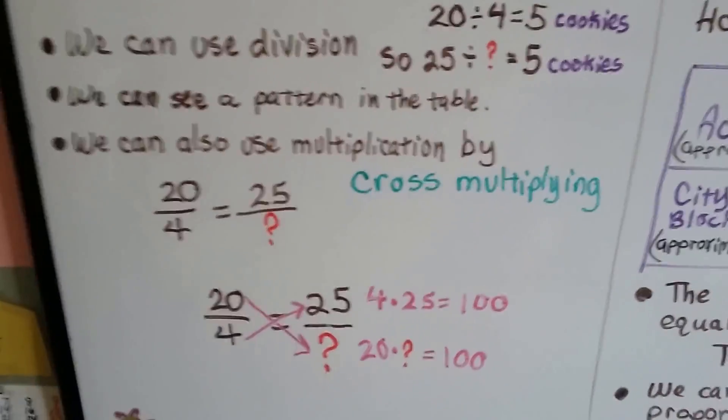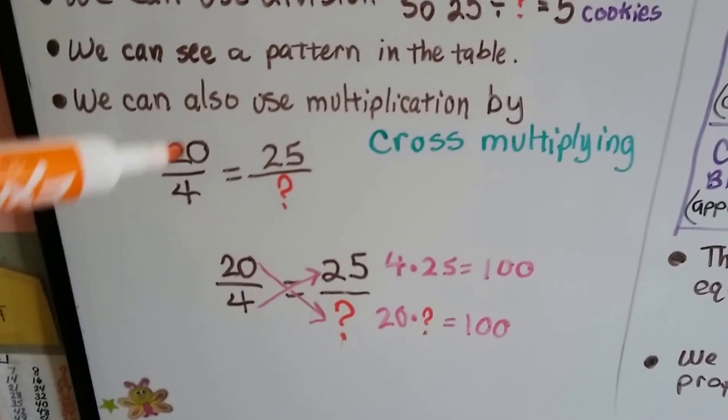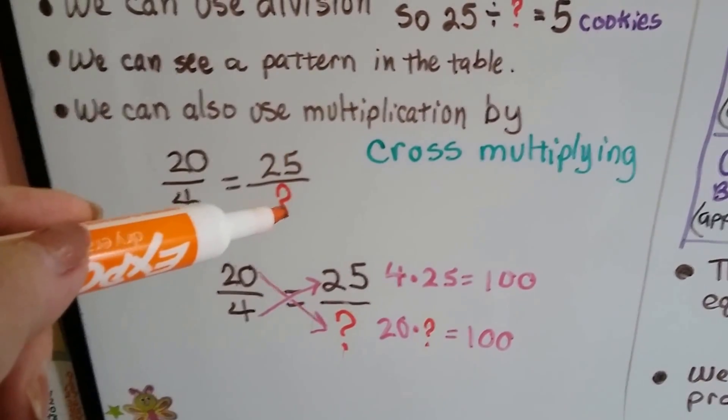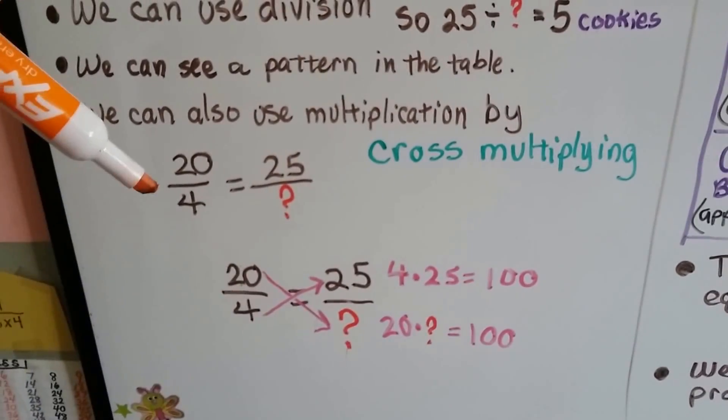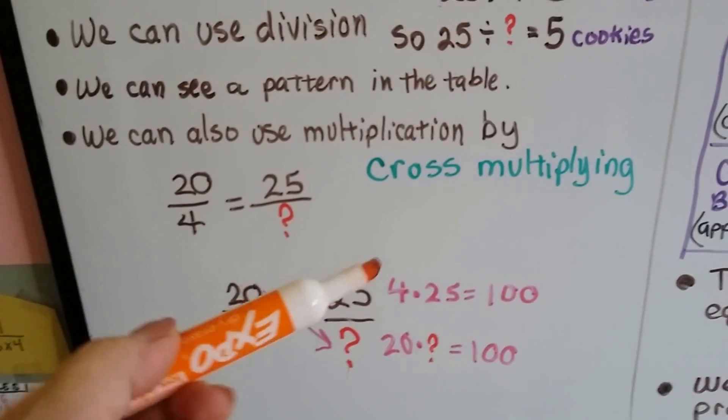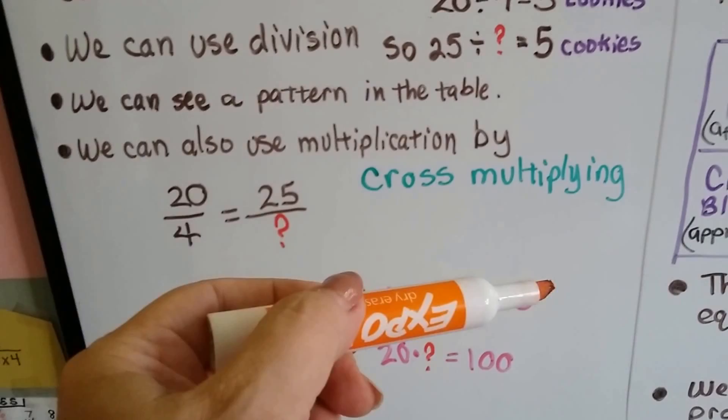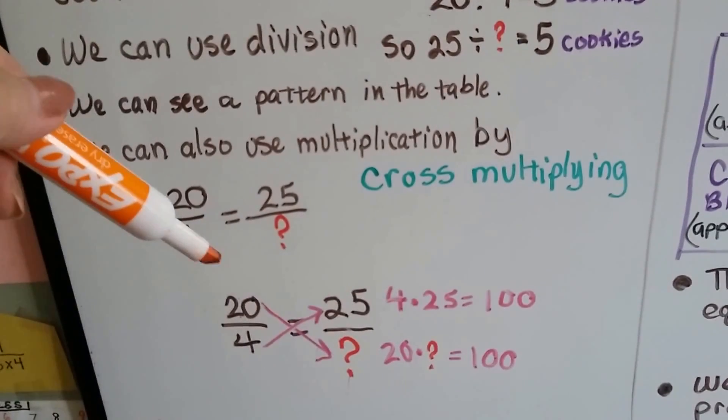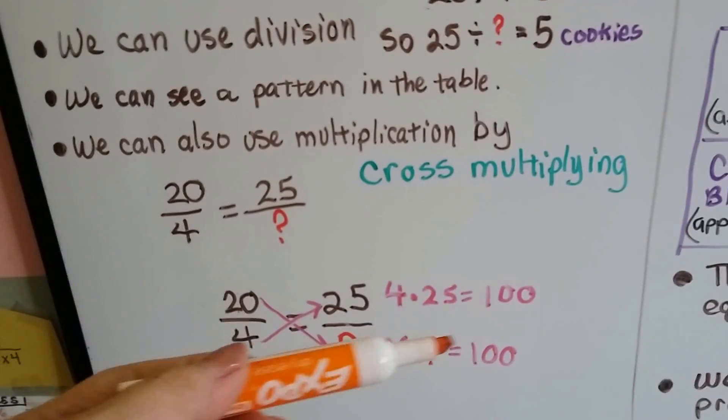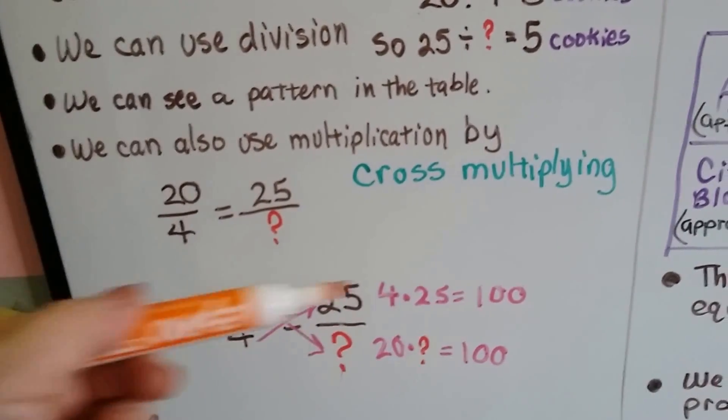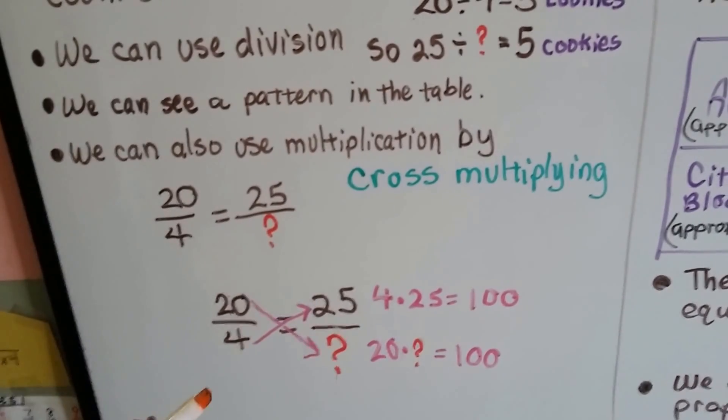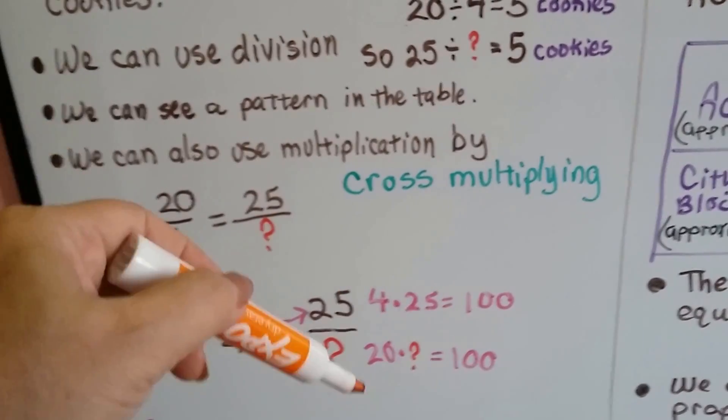We can also use multiplication by cross-multiplying. 20 over 4 is equal to 25 over something. What we do is we come down and across, and we go up and across. 4 times 25 equals 100, so 20 times something should equal 100. Now, we don't go straight across. We make an X, like a cross. That's why it's called cross-multiplying.